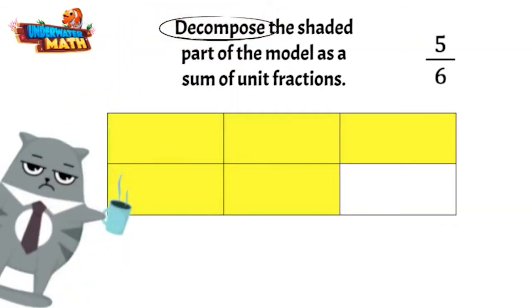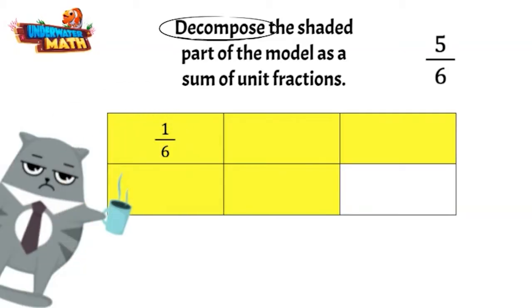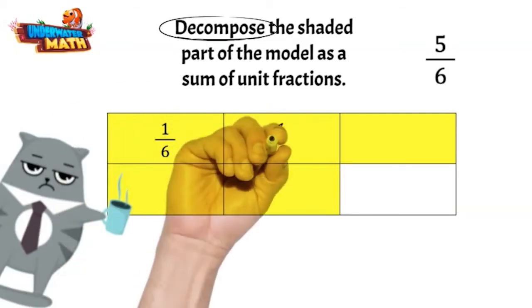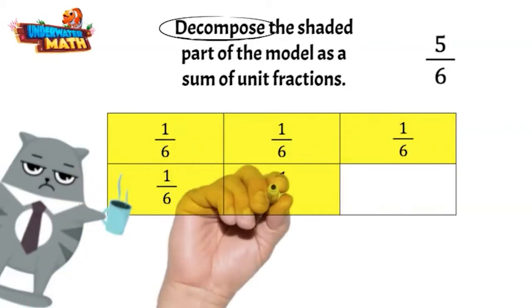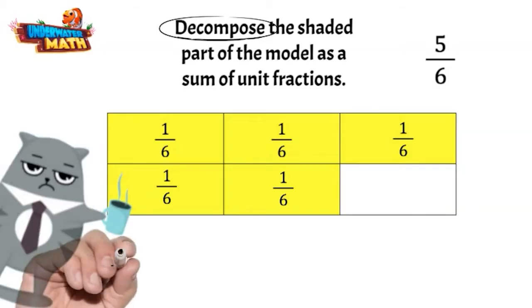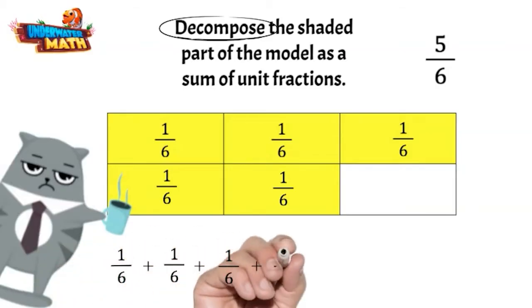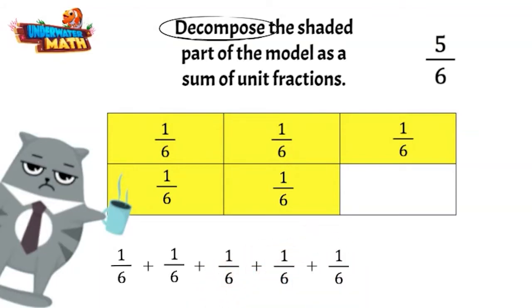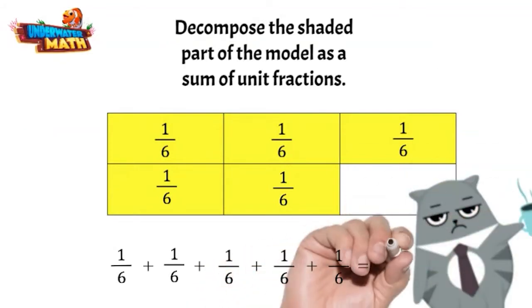What fraction represents just one of these yellow pieces? One-sixth — it is one shaded out of six. Each of these parts is one-sixth. Now let's write these unit fractions as a sum: one-sixth plus one-sixth plus one-sixth plus one-sixth plus one-sixth equals five-sixths. You got it!